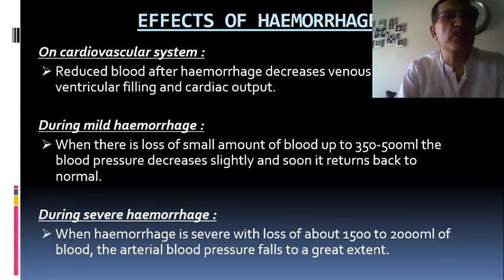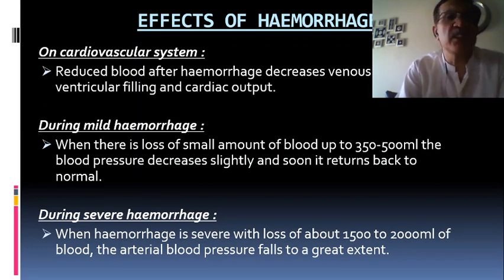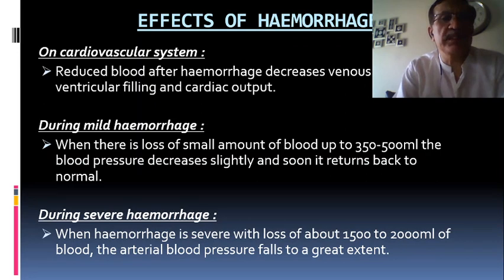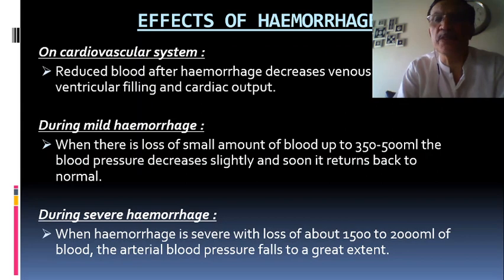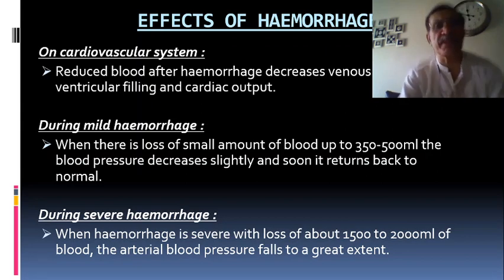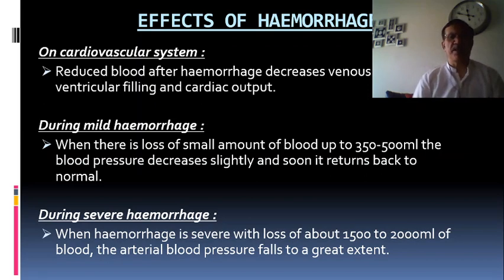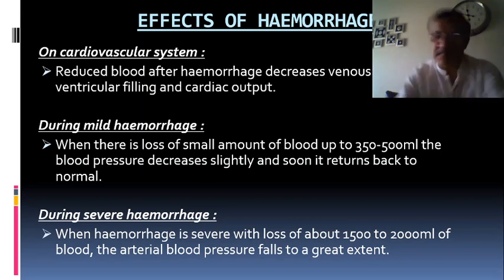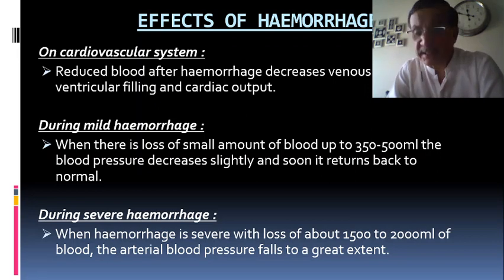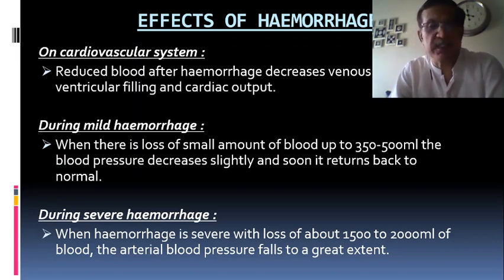Effects of hemorrhage on the cardiovascular system include reduced blood volume, decreased venous return, decreased ventricular filling, and decreased cardiac output. With mild hemorrhage — loss of up to 350 to 500 ml — blood pressure decreases slightly but soon returns to normal via compensatory mechanisms. During severe hemorrhage with loss of about 1.5 to 2 litres of blood, the arterial blood pressure falls to a greater extent below the normal cutoff of 90/60 mmHg.